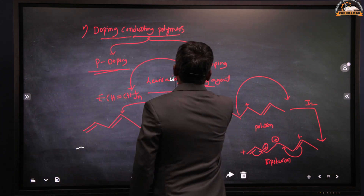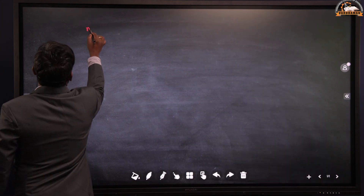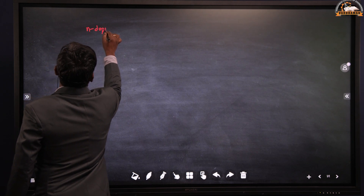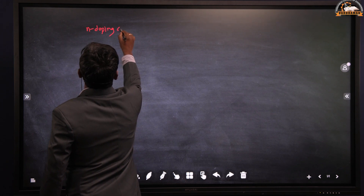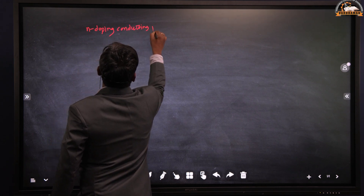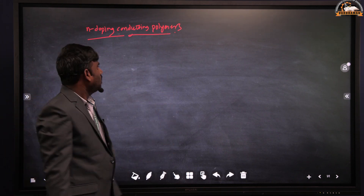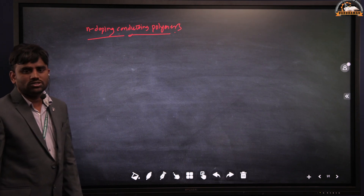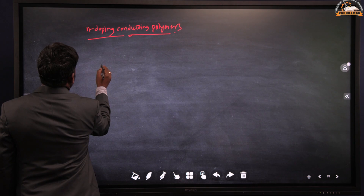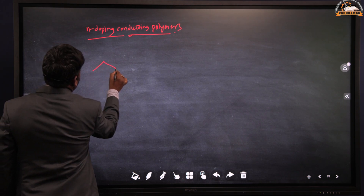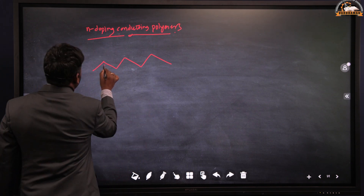Moving to the second one: n-doping conducting polymers. N-doping means adding a Lewis base or reducing agent. The main mechanism is the formation of negative charge on the backbone of the polymer chain, and then the polymer exhibits the conducting property. I am going to explain this with the same example of polyacetylene.